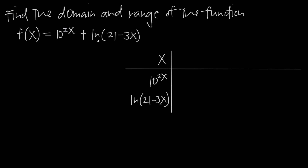In order for the natural log function to be defined, the argument inside has to be greater than 0. So in this function, the function is only defined when 21 minus 3x is greater than 0. Similarly, with a square root you can't have a negative value underneath the sign, so you'd set the expression greater than or equal to 0. With a fraction, the denominator cannot equal 0, so you'd set the denominator not equal to 0. If nothing restricts the domain, the domain is all real numbers.